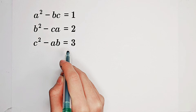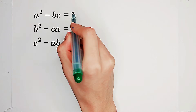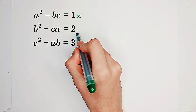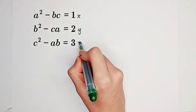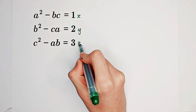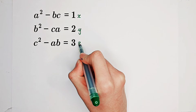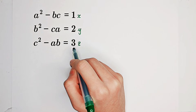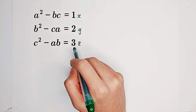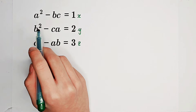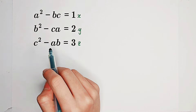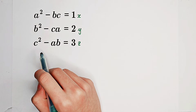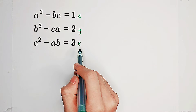Firstly, let's generalize this system of equations. Replace 1, 2, and 3 with x, y, and z. So we just solve for a, b, and c in the system: a squared minus bc equals x, b squared minus ca equals y, and c squared minus ab equals z, where x, y, z are positive real numbers.